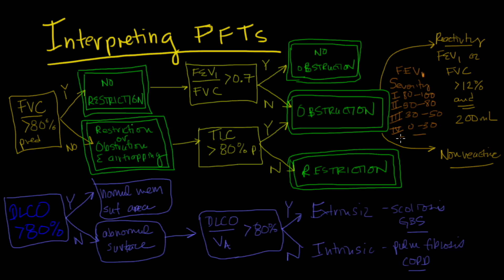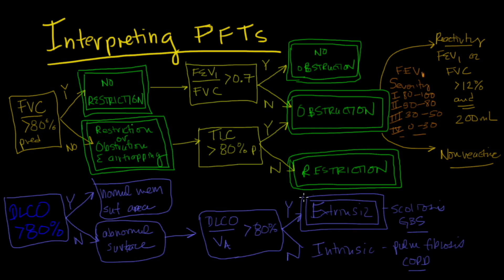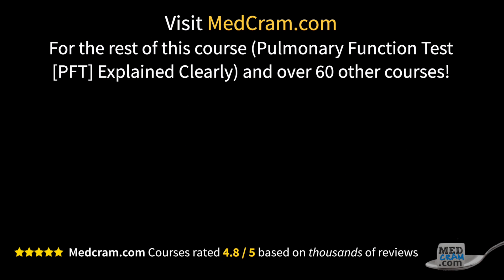Once you've diagnosed obstruction, you can break it down by severity and determine whether there's reactivity or non-reactivity. Separately, look at the DLCO — if normal, great; if not, it could be extrinsic or intrinsic disease. By looking at DLCO divided by alveolar ventilation, you can make that distinction. You can then combine this with your other diagnoses to determine the final diagnosis. We'll go over actual examples to practice interpreting PFTs correctly.